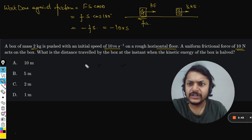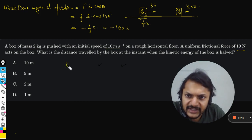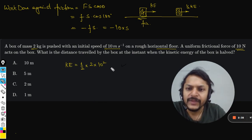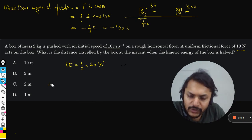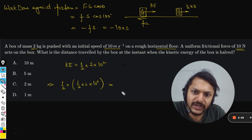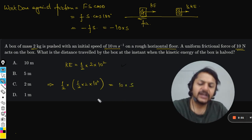Let us find the kinetic energy. It is given by half mv squared. According to our question, half of this energy should be equal to 10 into S.